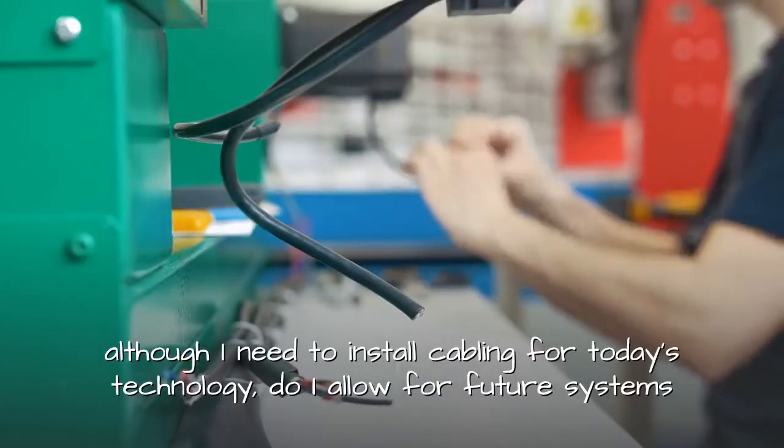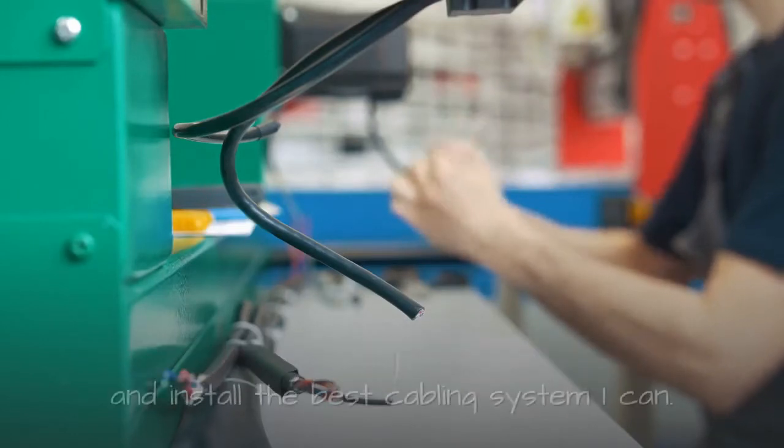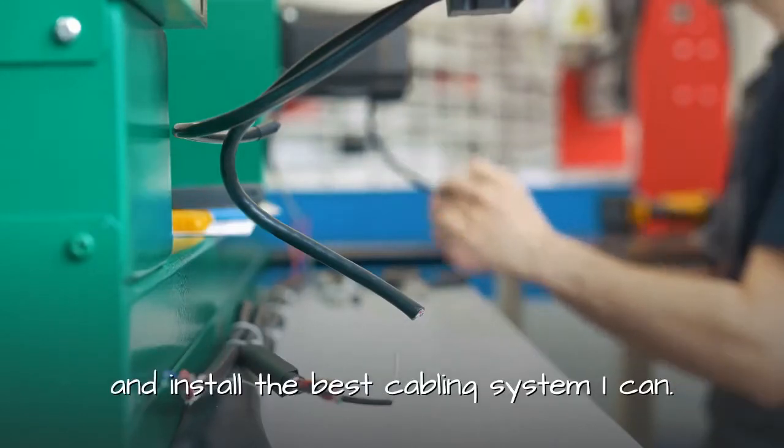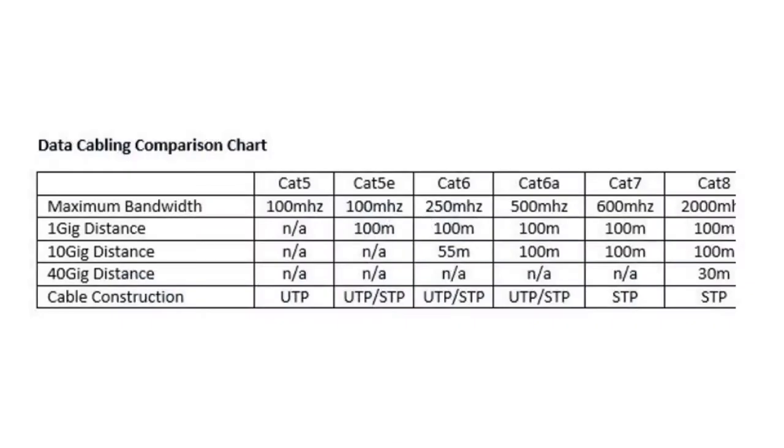The consideration is although I need to install cabling for today's technology, do I allow for future systems and install the best cabling system I can? Data cabling comparison chart, CAT 5 vs CAT 6 vs CAT 7. Please see the following chart to compare copper cabling standards.